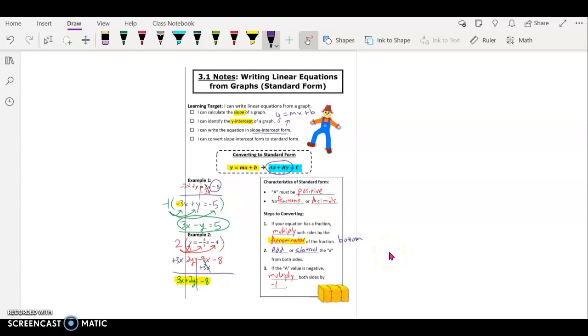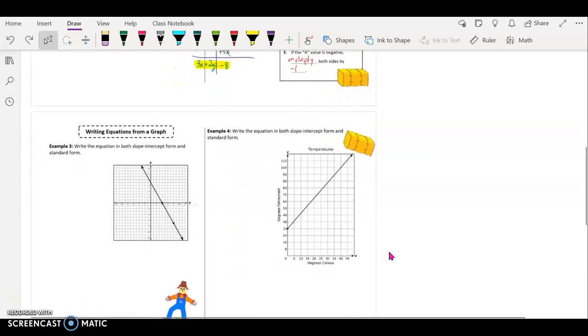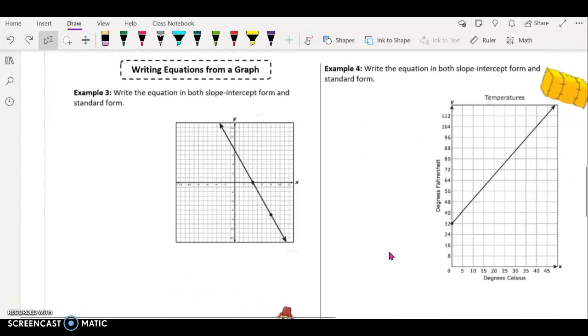Okay everyone, we've done the first portion of the 3.1 notes which was converting from y equals mx plus b, which is slope intercept form, to standard form. You're going to need that for the second part of our notes, so go ahead and open up your journal - open up your notes, sorry.